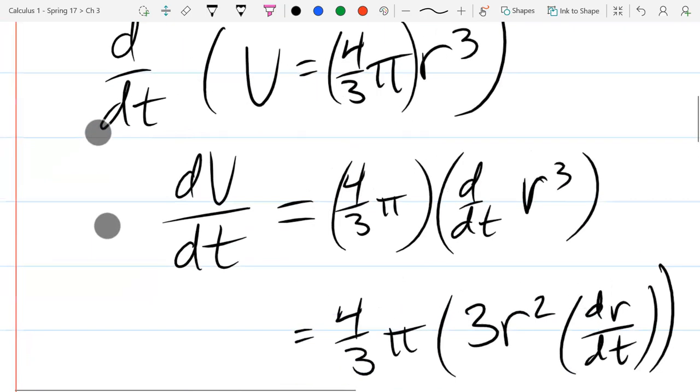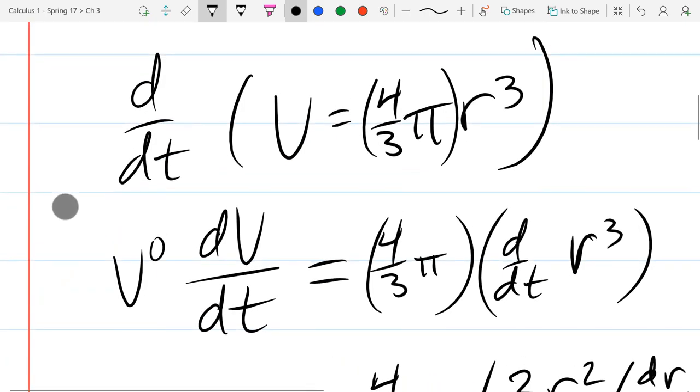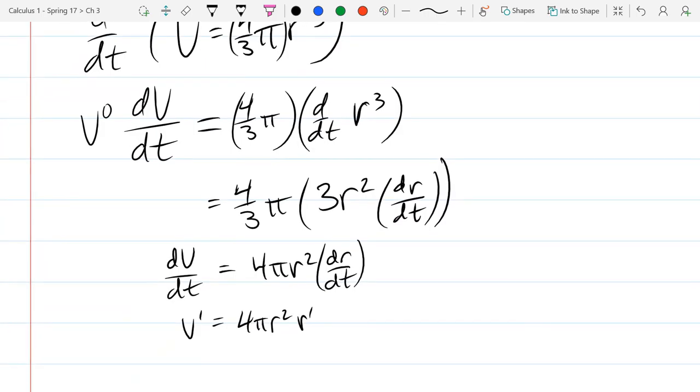You might be thinking, you didn't really do the chain rule on v. If you really want to, you could subtract one from the first power, so v to the zero power. So v to the zero times v prime. And of course, v to the zero power is one. You could write v to the zero if you want to, but not necessary.